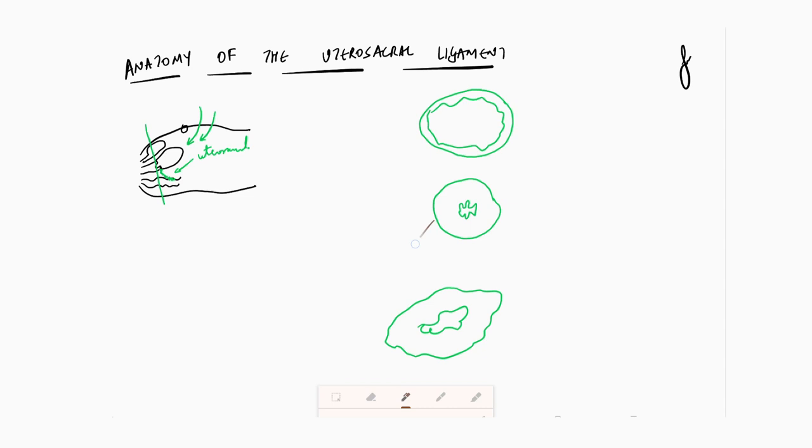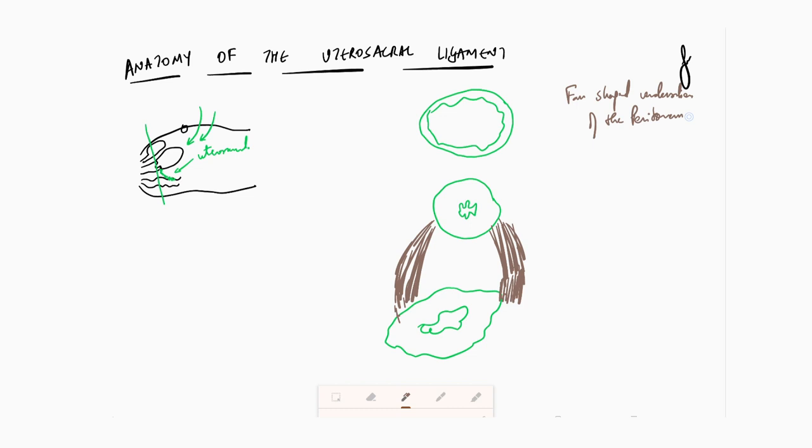Uterosacral ligament is an absolutely beautiful structure. It is just something called as a thickened peritonium, which is going to extend from the region of the posterolateral aspect of the cervix. Just remember this word, it is a fan shaped condensation of the peritonium. This is a very important word to remember.